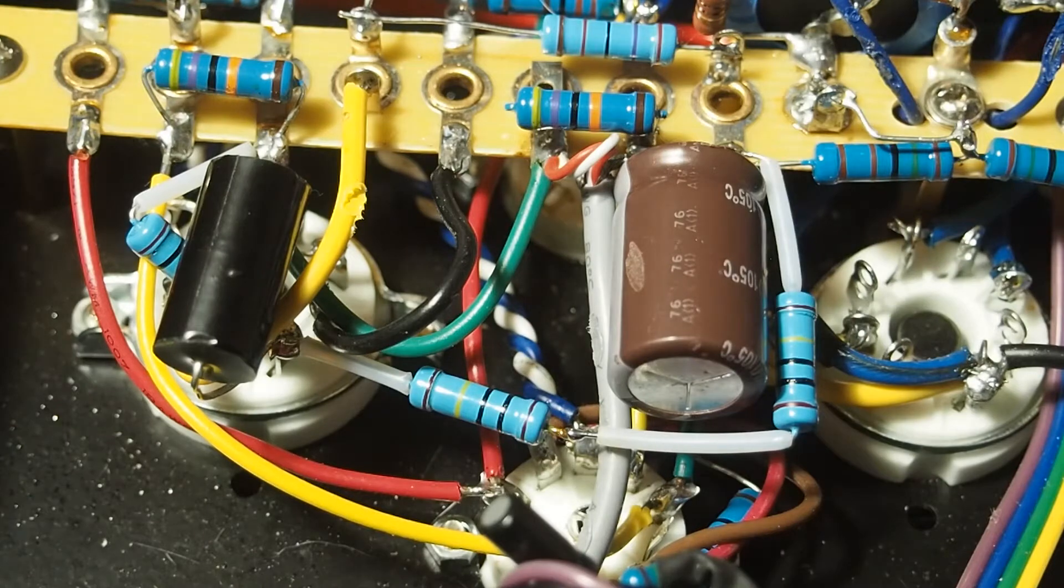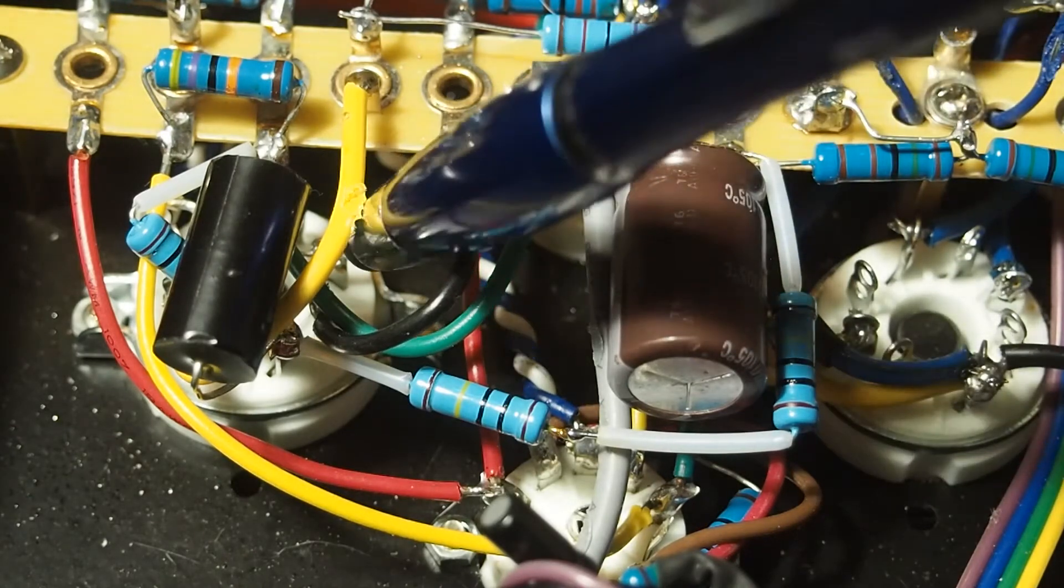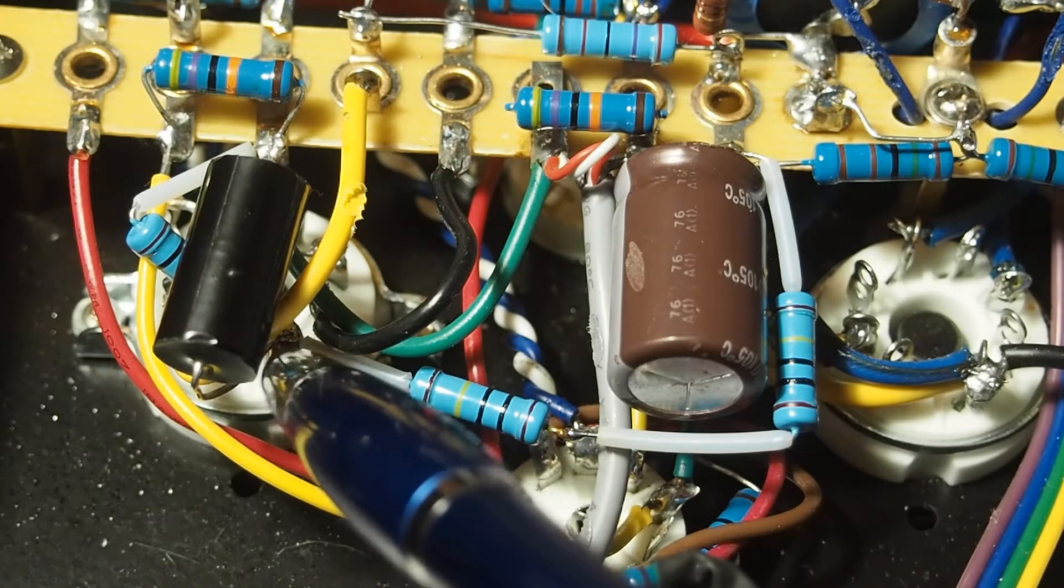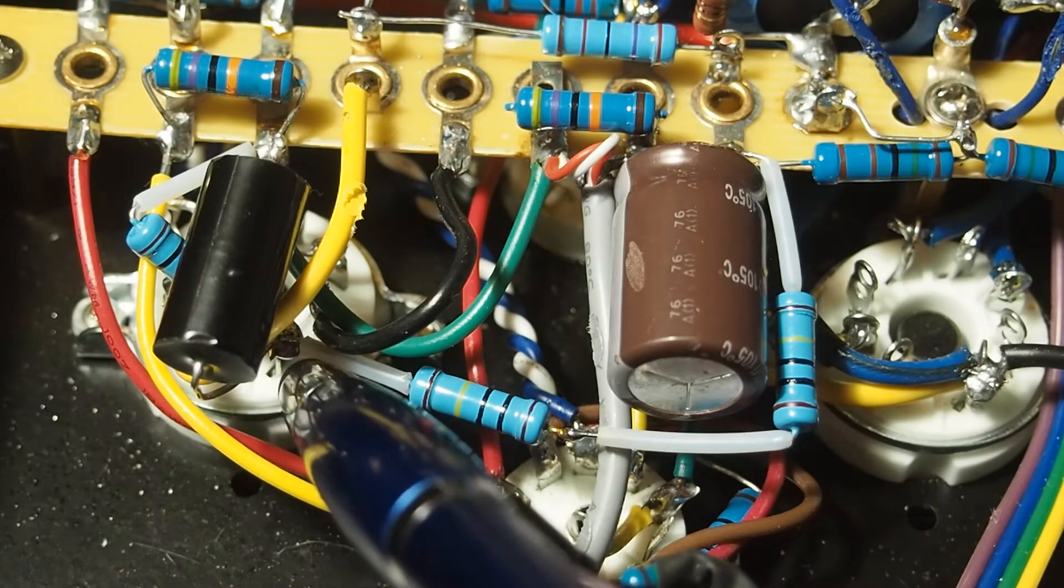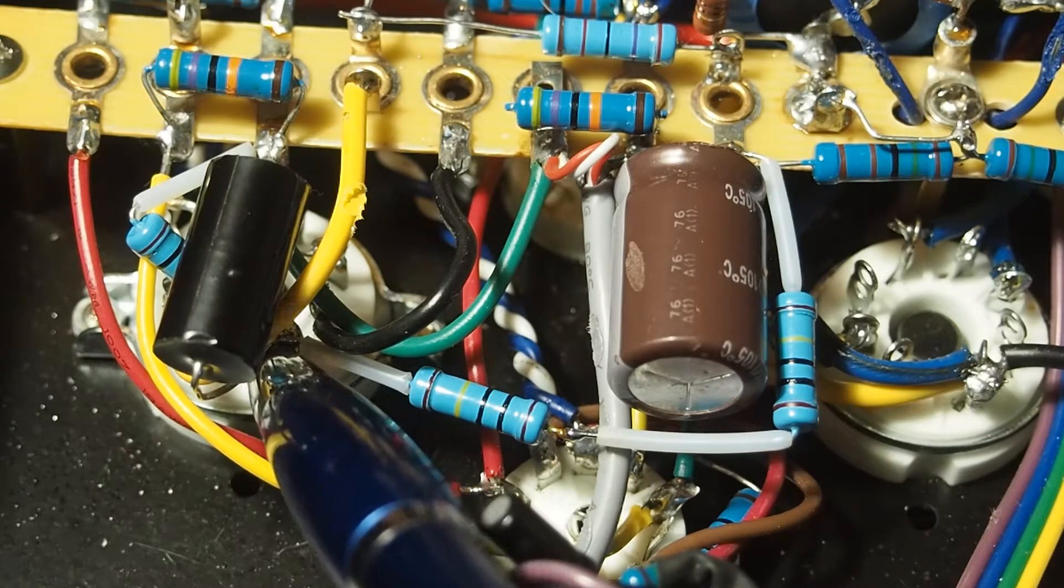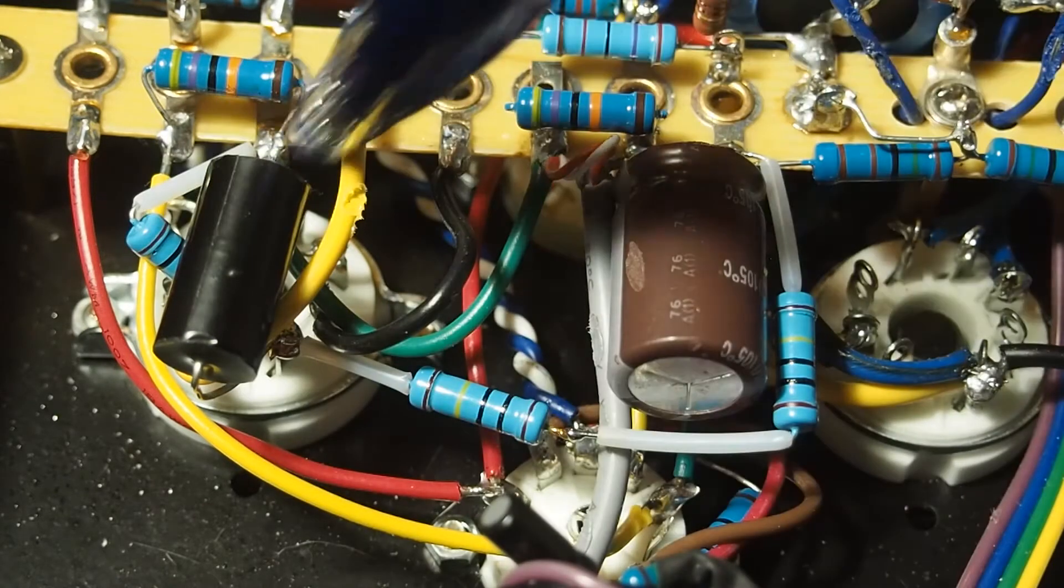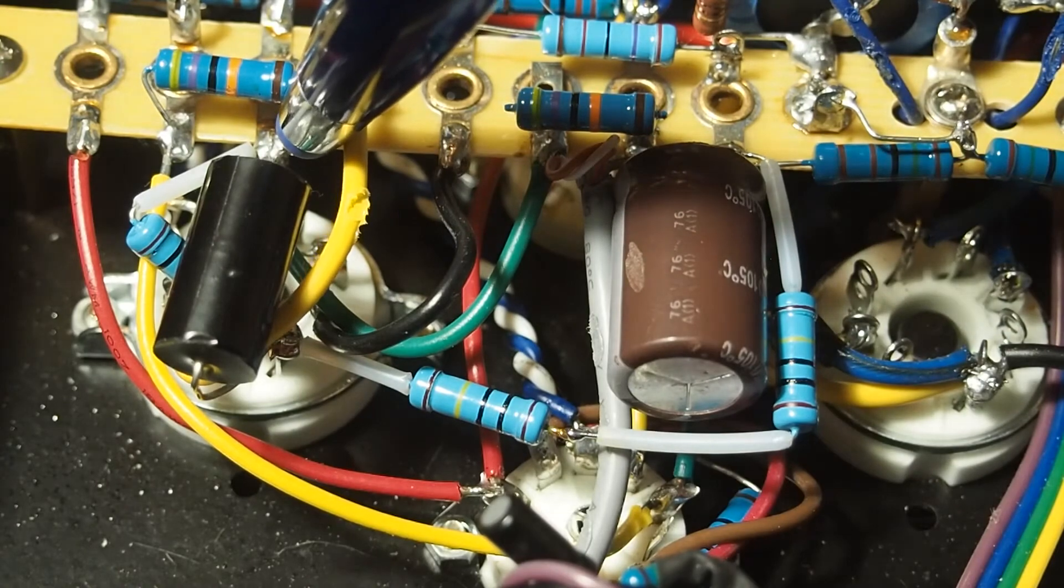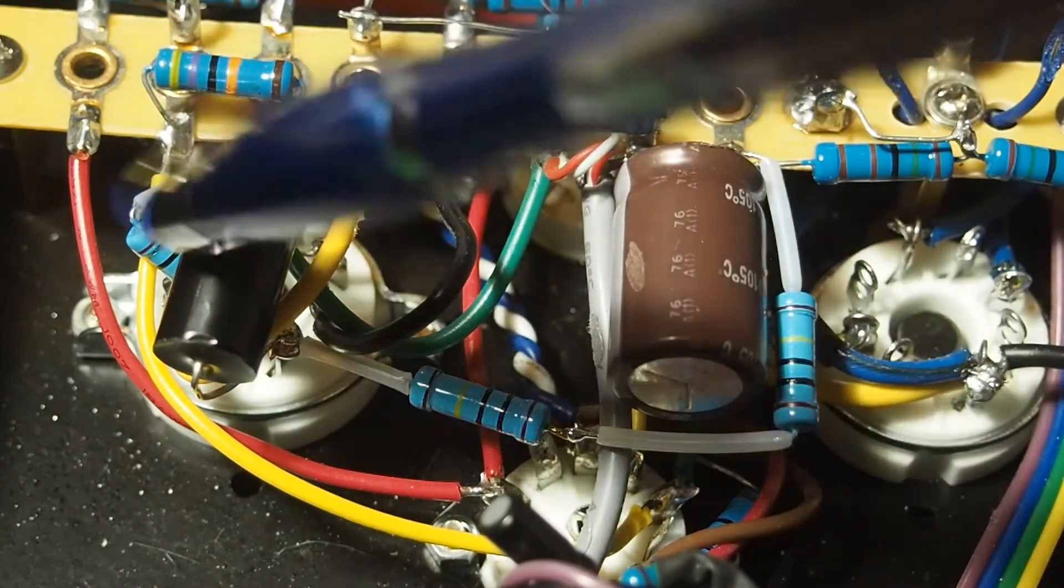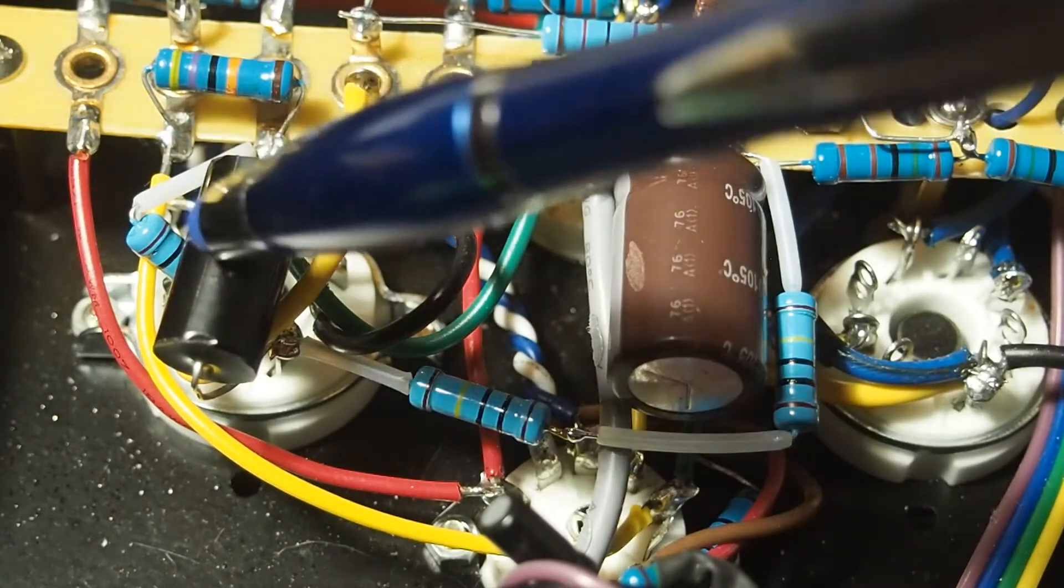And we're going to move that resistor and attach it from this pin that this coupling cap goes to, which is the grid of the upper section of the tube. And we're going to connect it to ground, basically putting this resistor in parallel with this coupling cap.